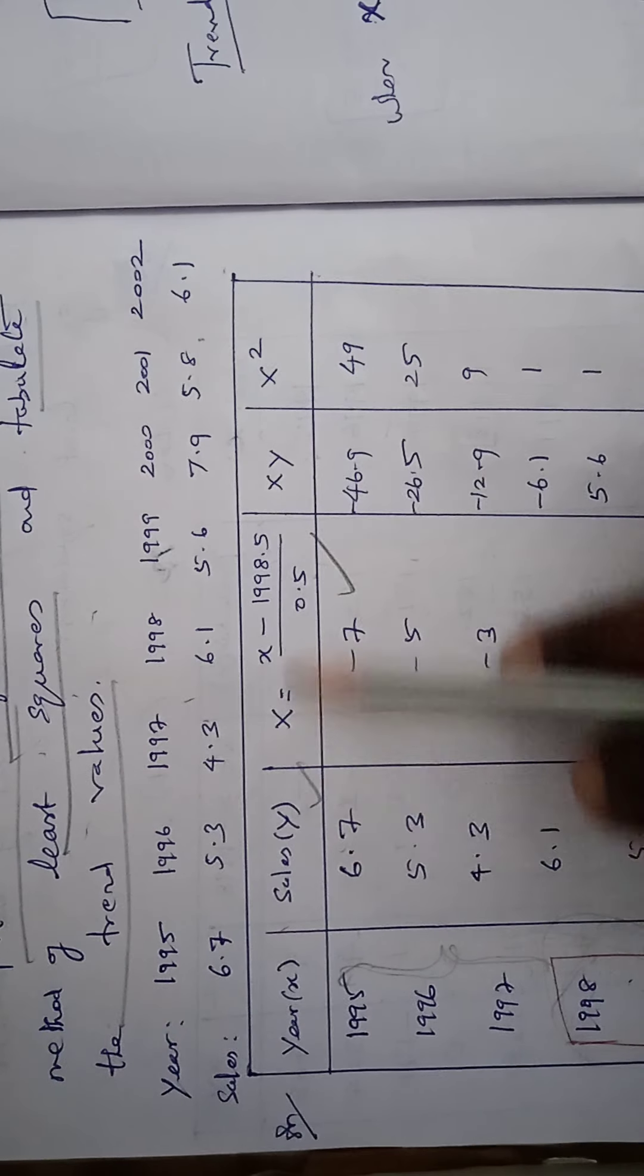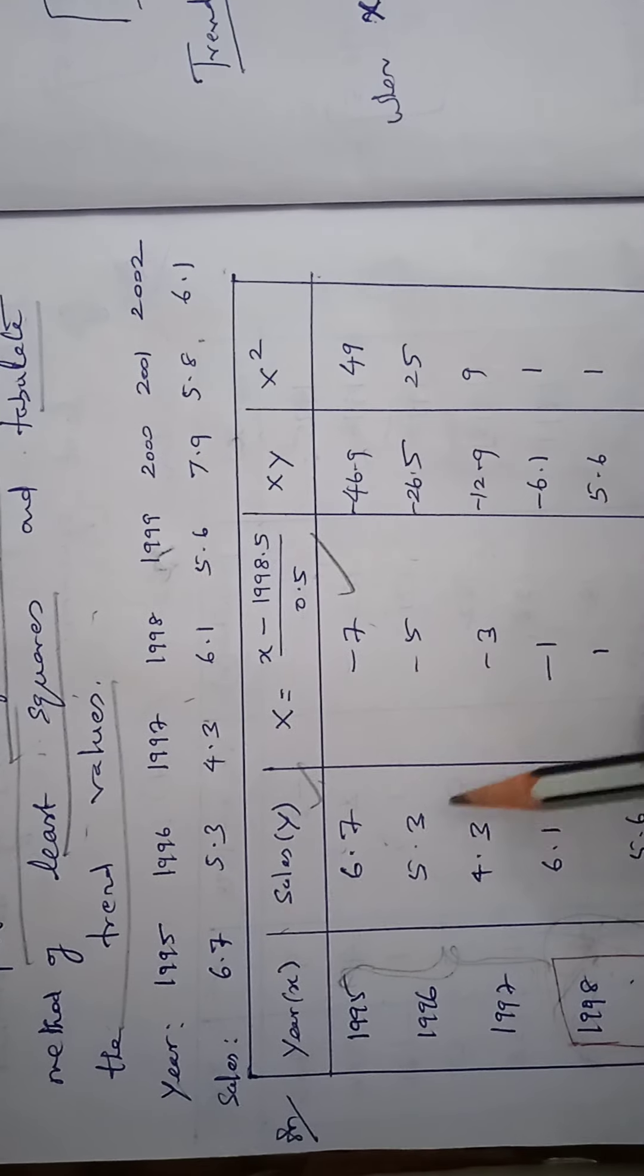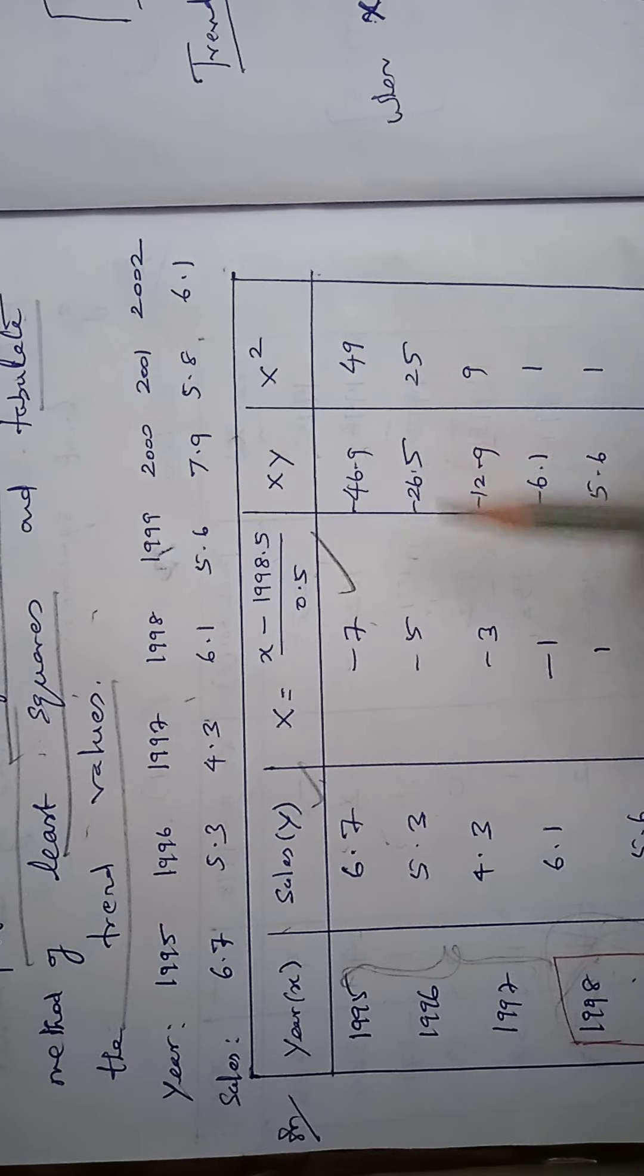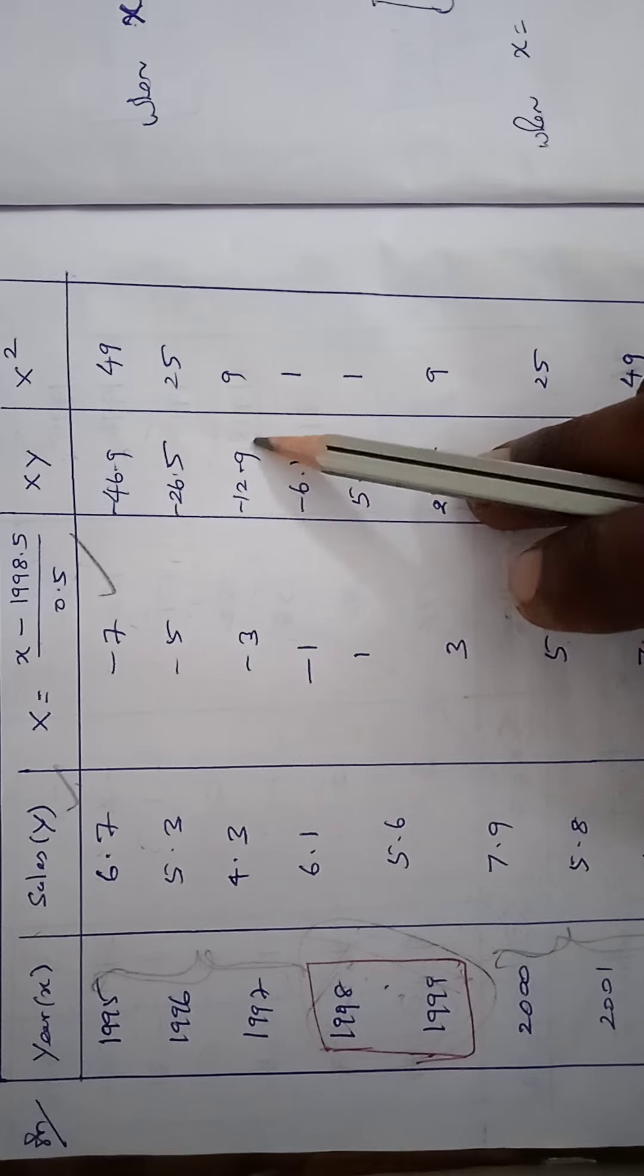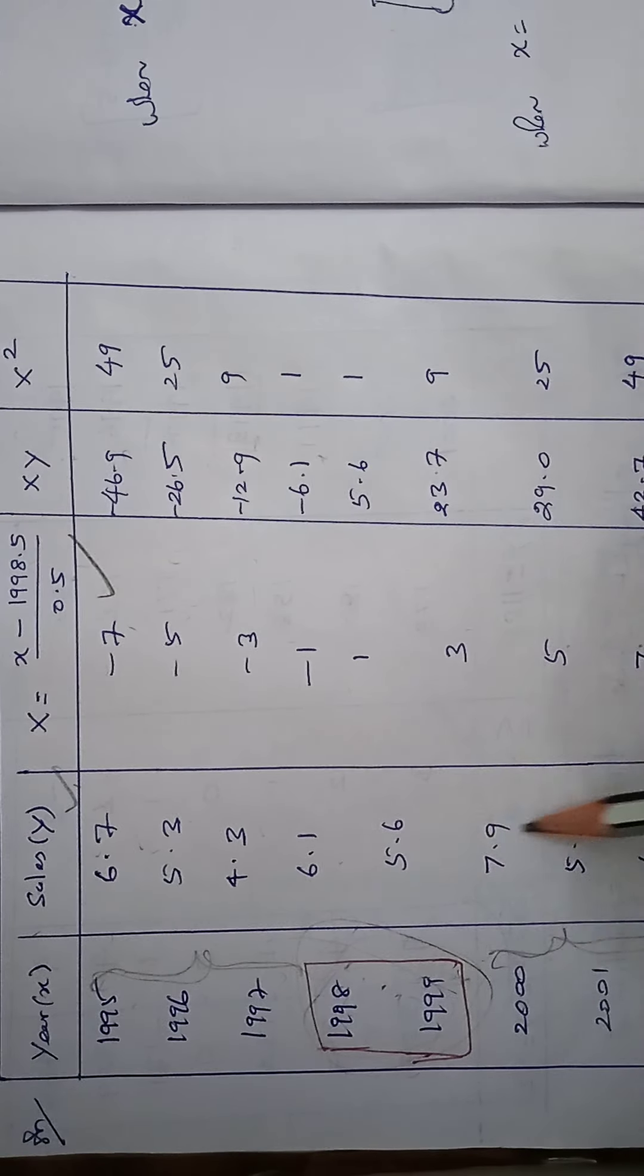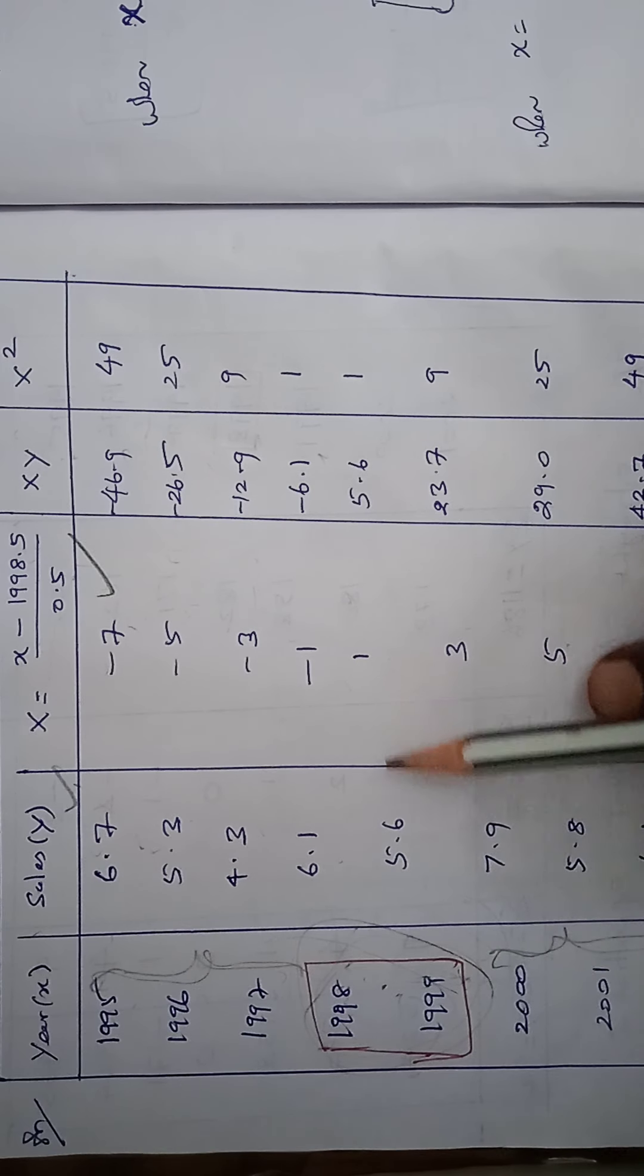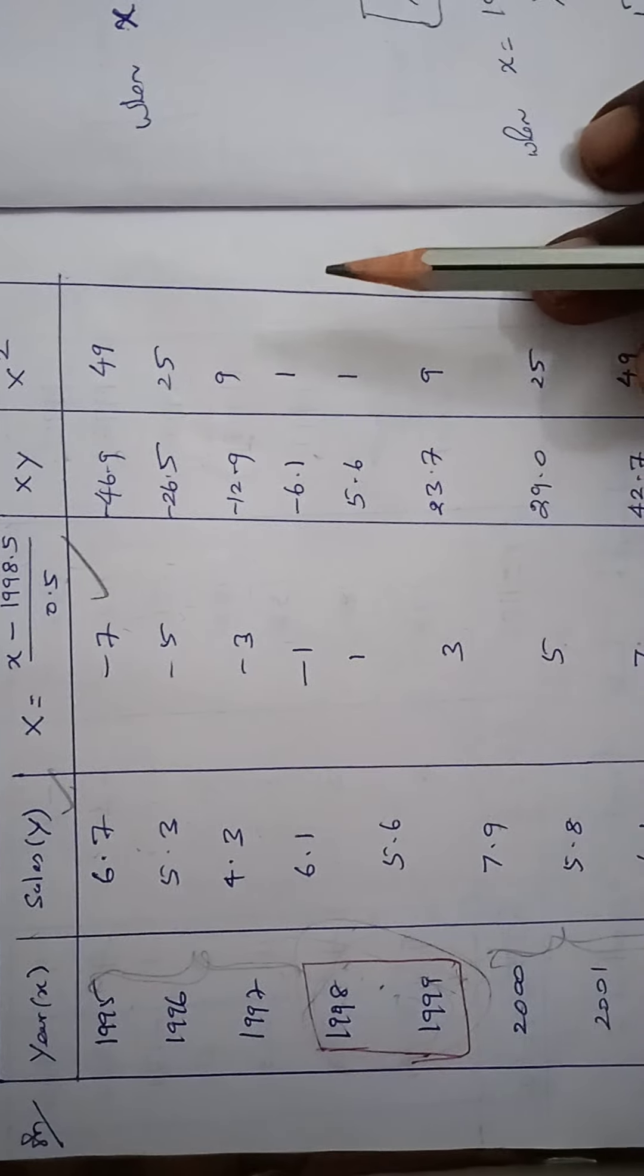Next we want to see XY. So multiply X and Y. So 6.7 into minus 7 is minus 46.9. 5.3 into minus 5 is minus 26.5. And 4.3 into minus 3 is minus 12.9. 6.1 into minus 1 is minus 6.1. Similarly 5.6 into 1 is 5.6 and 7.9 into 3 is 23.7.